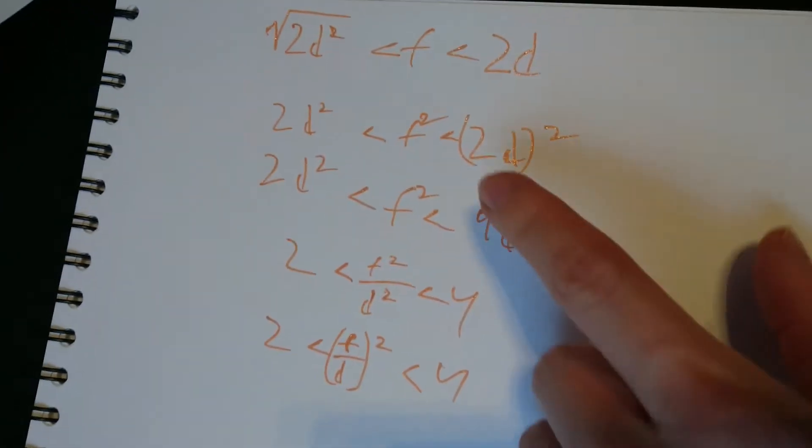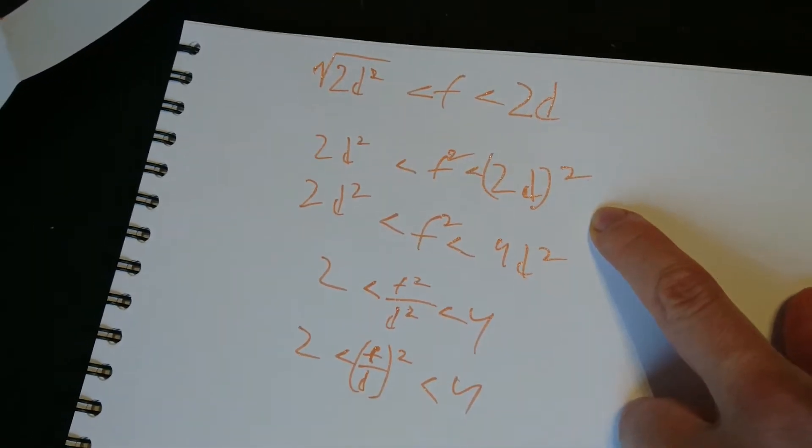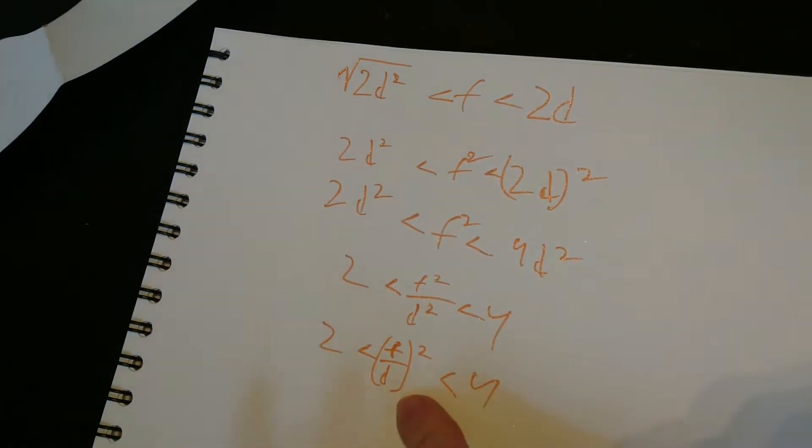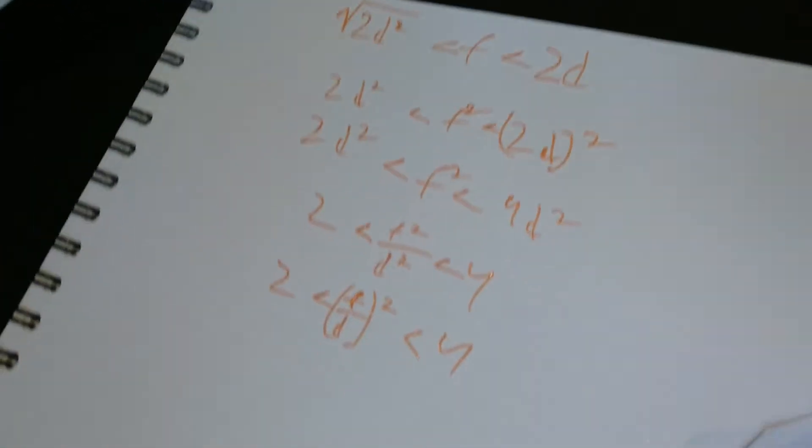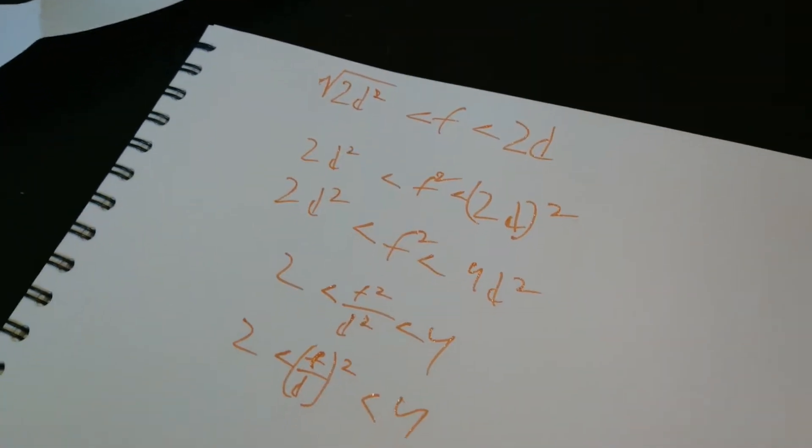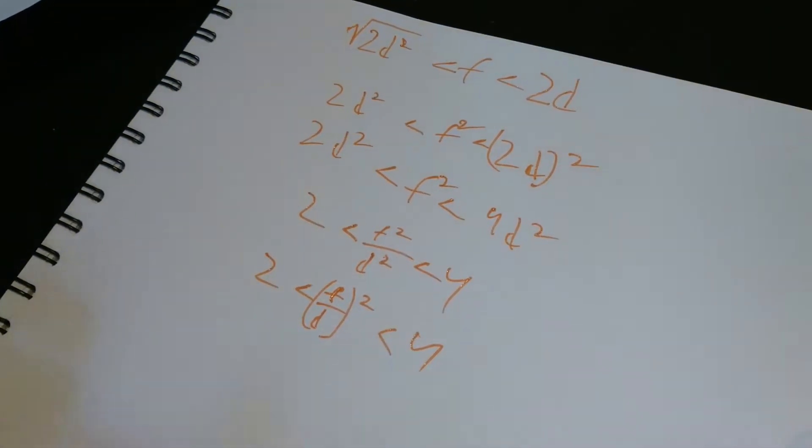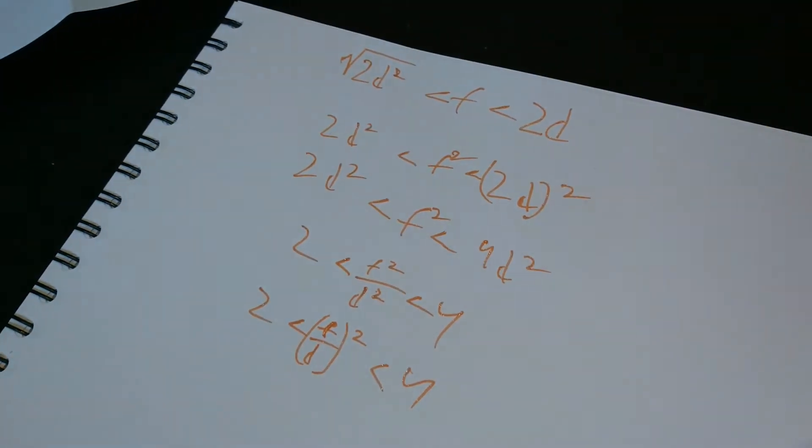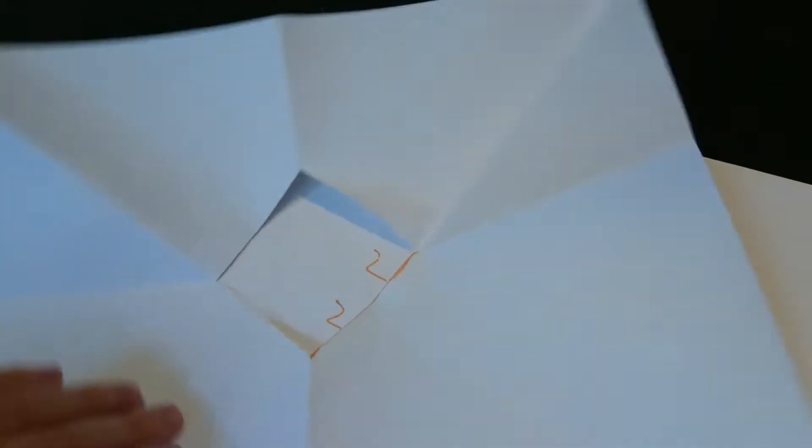So you made this inequality, and then you're squaring both parts, and you come to the conclusion that F over D squared is in between 2 and 4, which is a ratio squared. Yeah. So the ratio of the squares of the F and the D should be between 2 and 4. So the ratio between the diameter of the circle and the length of the square, all squared, should be in between 2 and 4. And this is what allowed you to build this. But you also have to know how to fold this. Because if you don't fold it directly... Yeah, that they explained in the video.